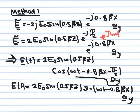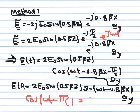This is how the electric field looks in the time domain. Subtracting π/2 from the phase of the cosine shifts it in the positive time direction, turning the cosine into a sine. So cos(ωt − π/2) = sin(ωt). This is why we write the field as a sine quantity: 2E-naught sine(0.5βz) sine(ωt − 0.8βx). When you subtract you shift in positive time; when you add you shift in negative time.